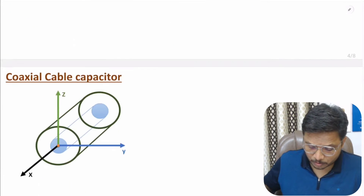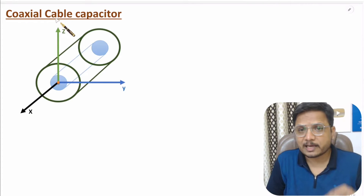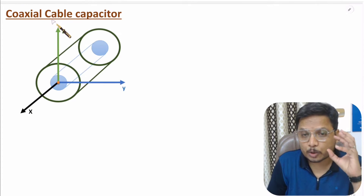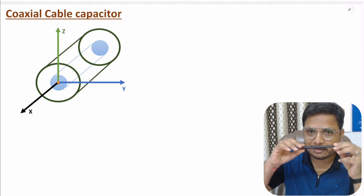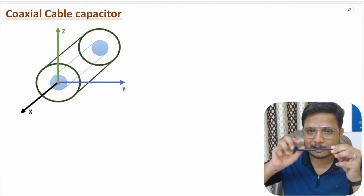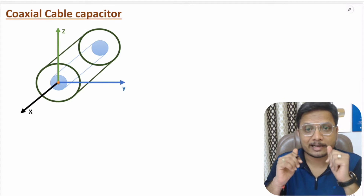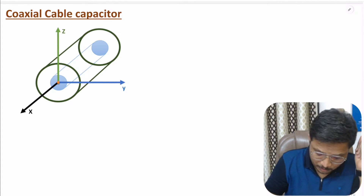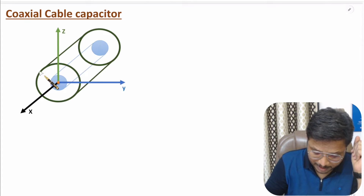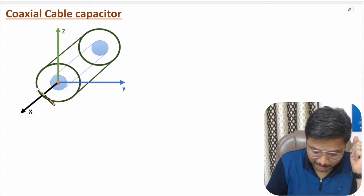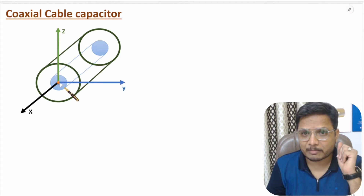So first of all, let me show the structure of coaxial cable. In a coaxial cable, there are two conductors — there will be an inner conductor and there will be an outer conductor, separated by dielectric material. You can observe here we have inner conductor and here we have outer conductor.